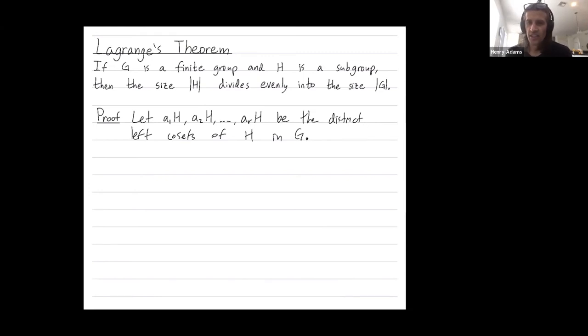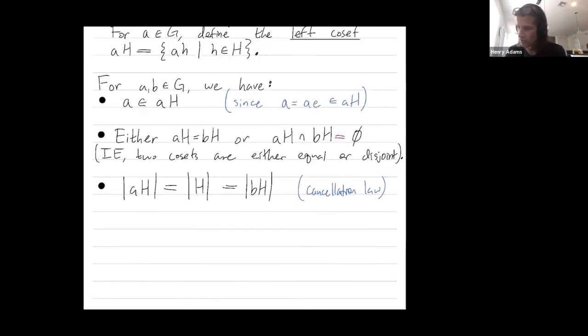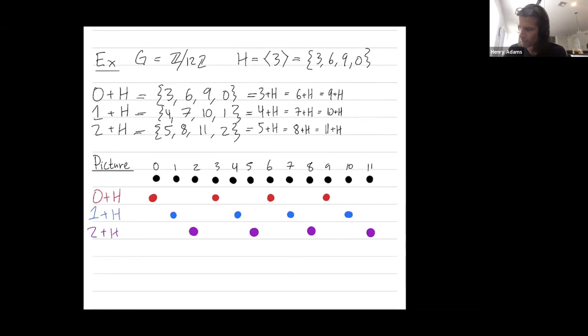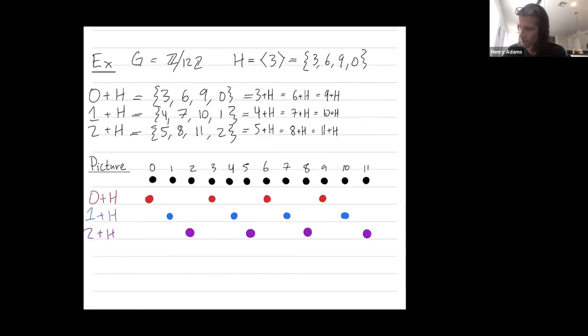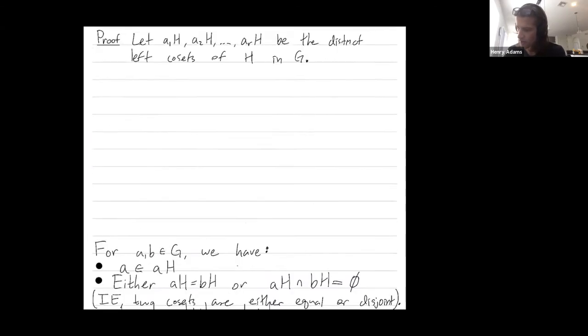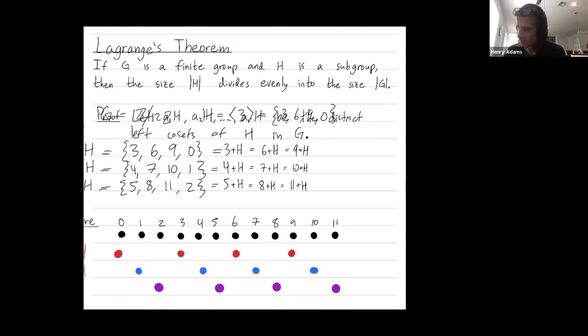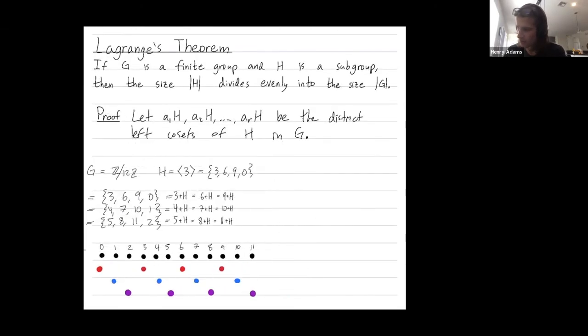So R is the number of cosets that we have. Let me draw a picture of this. All right, so I'm not going to leave this up here for long.